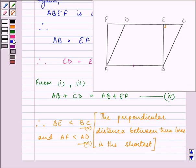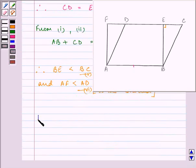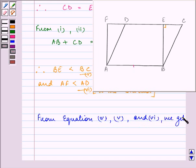Further, from equations 4, 5 and 6, we have, that is, on adding them, we have AB plus CD plus BC plus AD is greater than AB plus EF plus BE plus AF.